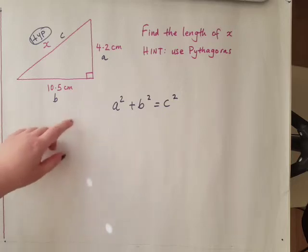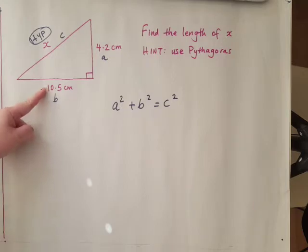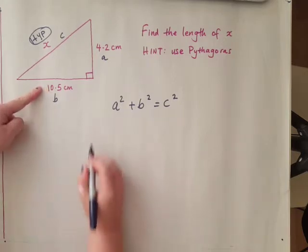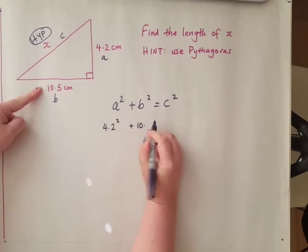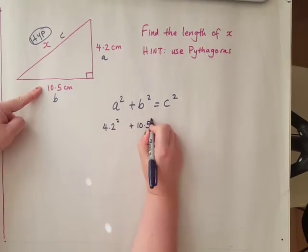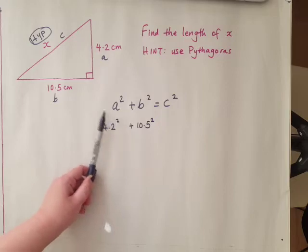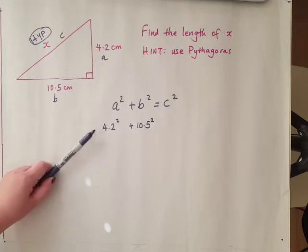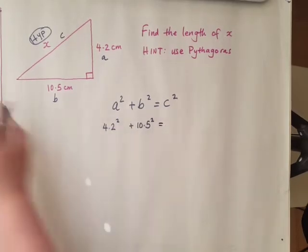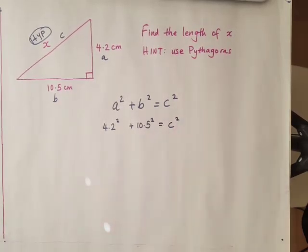And next I'm going to replace the letters A and B with the numbers that are shown here because I know what they are. It's really important that you remember to write in squared. The formula says it's A squared so replace A with 4.2. That's going to be 4.2 squared. Over here we don't know what C is so I'm going to copy down the letter C like that.